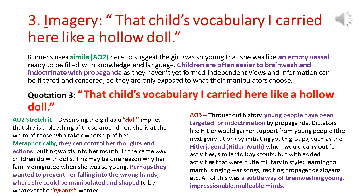If we want to analyse the effect of describing the girl as a doll, it implies that she's a plaything of those around her — she's at the whim of those who take ownership of her. Metaphorically, they can control her thoughts and actions; they can even put words into her mouth, in the same way that children do with dolls. This might be one reason why her family emigrated when she was so young — perhaps they wanted to prevent her falling into the wrong hands where she could be manipulated and shaped to be whatever those tyrants wanted her to be.